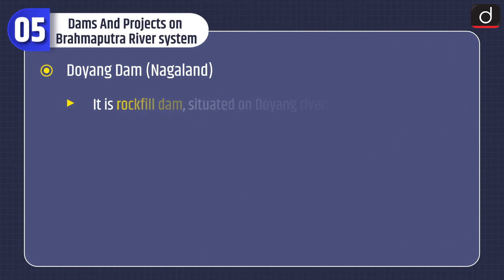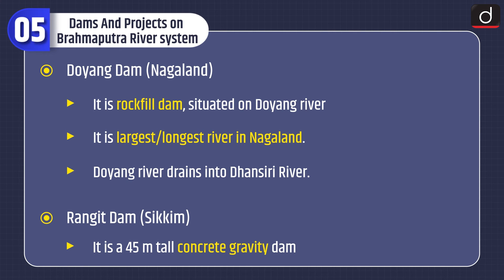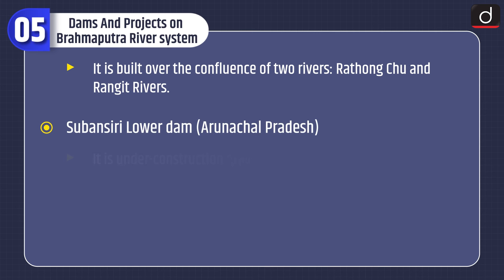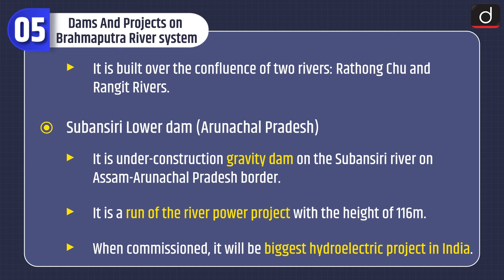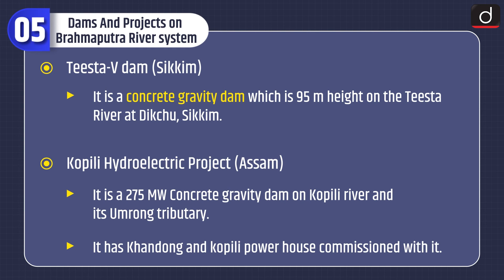Moving on to dams and projects on the Brahmaputra river system: (1) Doyang Dam, Nagaland — a rock-filled dam on the Doyang river, the largest river in Nagaland; the Doyang river drains into the Dhansiri river. (2) Rangit Dam, Sikkim — a 45-meter tall concrete gravity dam built over the confluence of the Rathong Chu and Rangit rivers. (3) Subansiri Lower Dam, Arunachal Pradesh — a run-of-the-river power project with a height of 116 meters; when commissioned, it will be the biggest hydroelectric project in India. (4) Tista V Dam, Sikkim — a concrete gravity dam, 95 meters in height, on the Tista river at Dikchu, Sikkim. (5) Kopili Hydroelectric Project, Assam — a 275 MW concrete gravity dam on the Kopili river and its Umrong tributary, with Khandong and Kopili powerhouses.